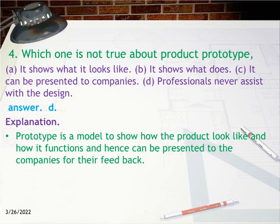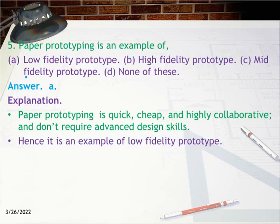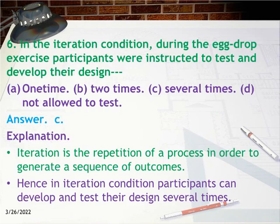Question 5: Paper prototyping is an example of: a) low fidelity prototype, b) high fidelity prototype, c) mid fidelity prototype, d) none of these. Answer: A. Explanation: Paper prototyping is quick, cheap, and highly collaborative and doesn't require advanced design skills. Hence it is an example of a low fidelity prototype.